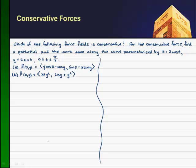So in this example, we want to find out which of the following force fields is conservative. And if one is conservative, we want to find the potential and the work done along the curve parameterized by x equals 2 cosine t, y equals 2 sine t, where t varies between 0 and pi over 2. So let's check part a.